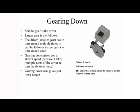Gearing down: the smaller gear is the driver and the larger gear is the follower. The smaller driver gear has to turn around multiple times to get the larger follower gear to turn around once. Gearing down gives you a slower speed because it takes multiple turns of the driver to turn the follower once, but it also gives you more torque.